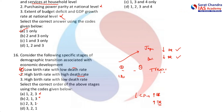Coming to option three: high birth rate with low death rate — take the case of India. We have slowly achieved a TFR of around 2.1, though southern states are below 2.1 and northern states are still around 2.4. Our life expectancy is around 69 to 70 years, so it is a case of high birth rate and low death rate. So option three comes here — the arrangement is two, three, one — and the answer is C.